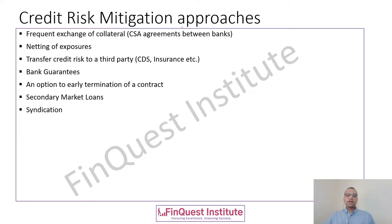Now talking about credit risk mitigation techniques which are frequently used by market participants. One is frequent exchange of collateral. Collateral is one component which plays a very important role in mitigation of credit risk, and one example of this is a CSA agreement. CSA stands for Credit Support Annex.